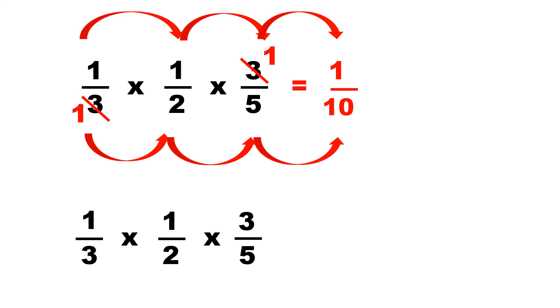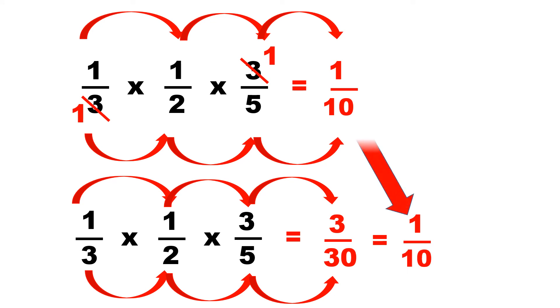And if you're too lazy to cancel, you could just multiply across without canceling. So, 1 times 1 times 3 equals 3. The bottom number is 3 times 2 times 5 equals 30. And let's reduce. The answer is 1/10. They match.